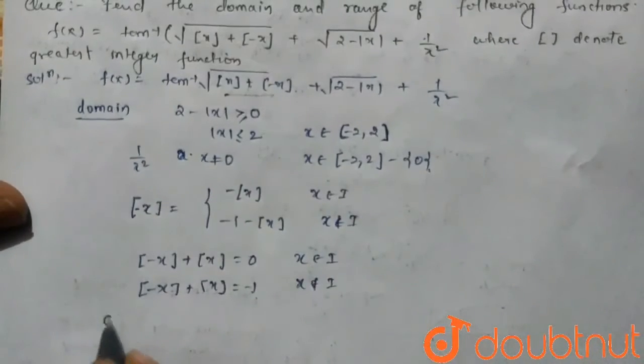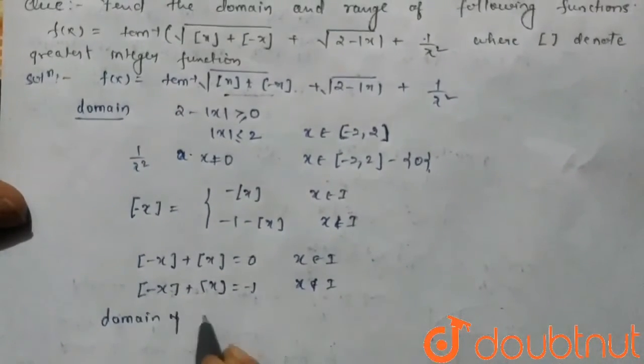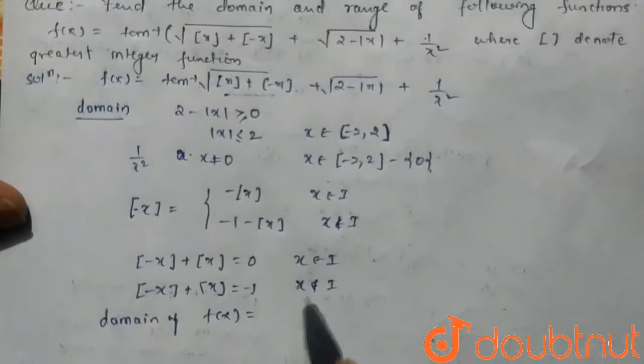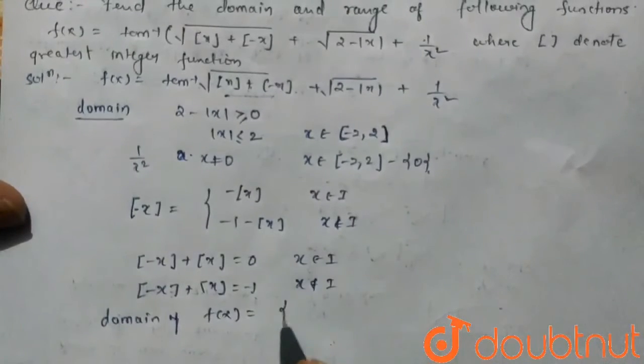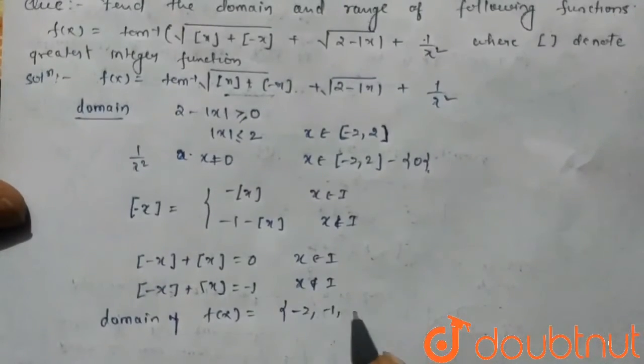So the domain of f(x) is equal to {-2, -1, 1, 2}. At zero it becomes infinity, so our domain is this.